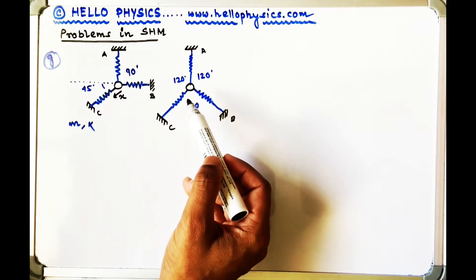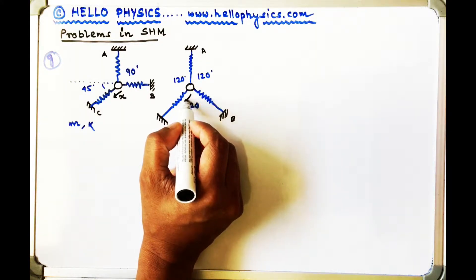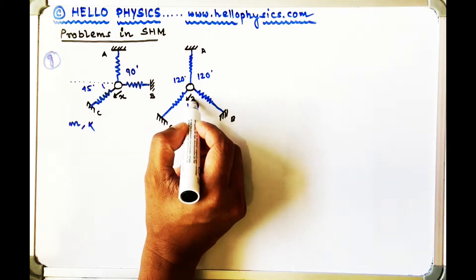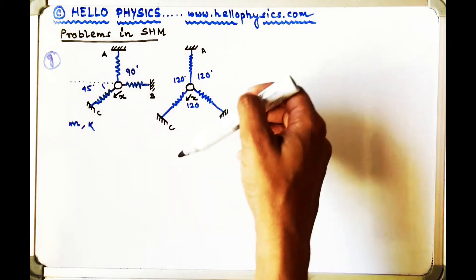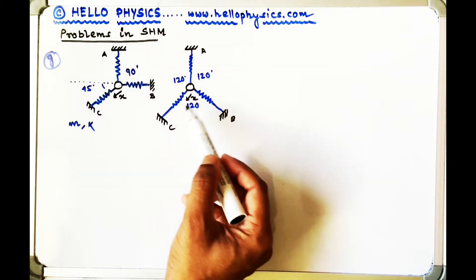Here also, the same thing is done. This object is given a push in a direction which is along the spring C, so that spring C is compressed by an amount of X.